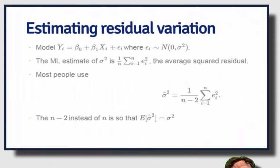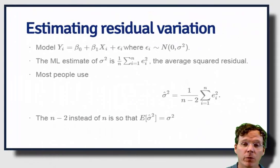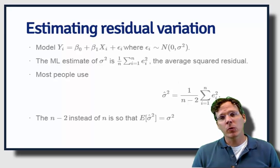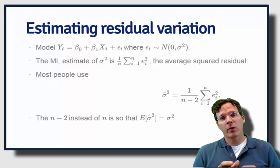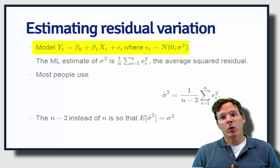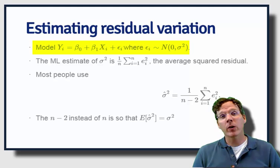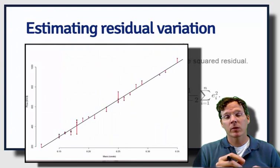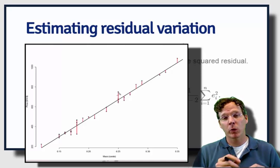Let's talk about residual variation really quickly before we finish talking about R squared. Residual variation is the variation around the regression line. Our residuals are the vertical distances between the outcomes and the fitted regression line.